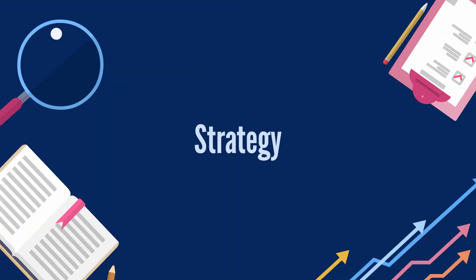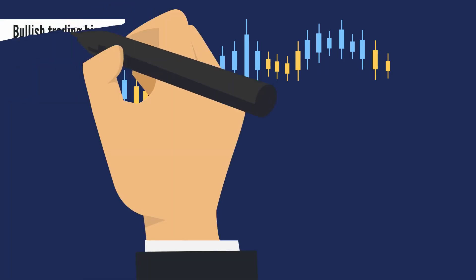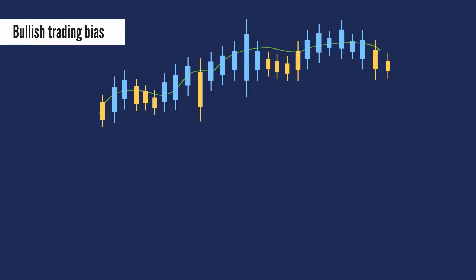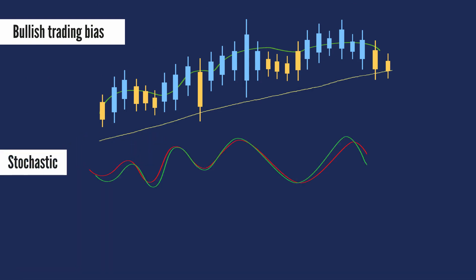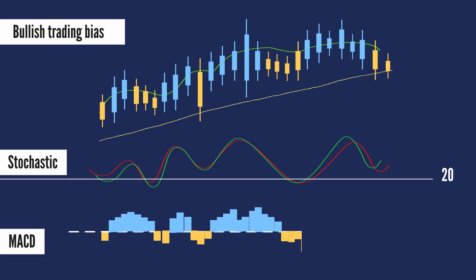When detecting buy signals, you should be aware that moving averages show a bullish trading bias, with the 20-day SMA trading above the 150-day SMA. The Stochastic Oscillator moves below 20 to signal a pullback. The MACD Histogram moves into positive territory to signal an upturn after the pullback.